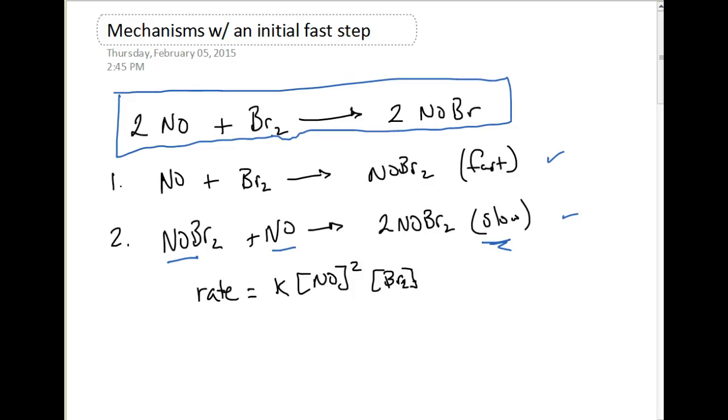And this is what's at play. Let's think about it this way. In our first step we have NOBr2 being produced at a very high rate of speed. And then NOBr2 is being consumed here, so it's an intermediate.